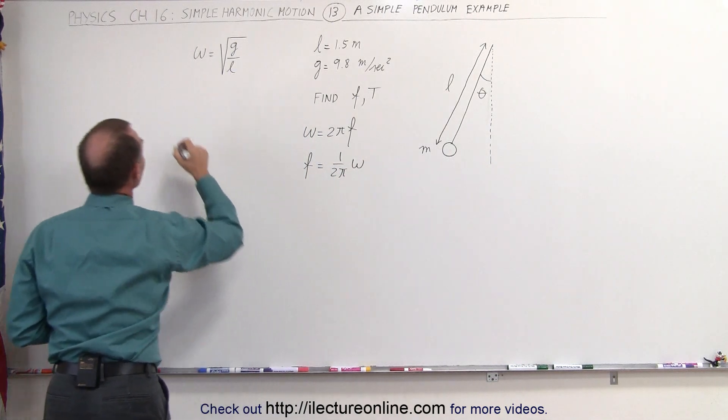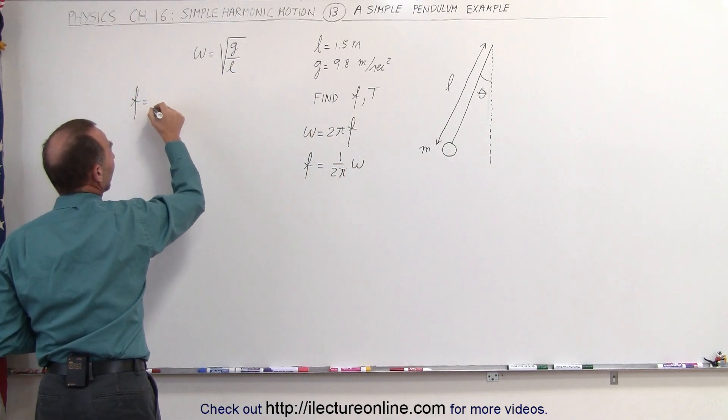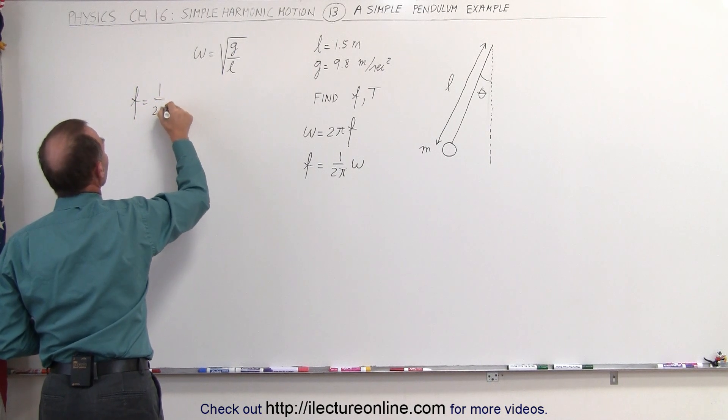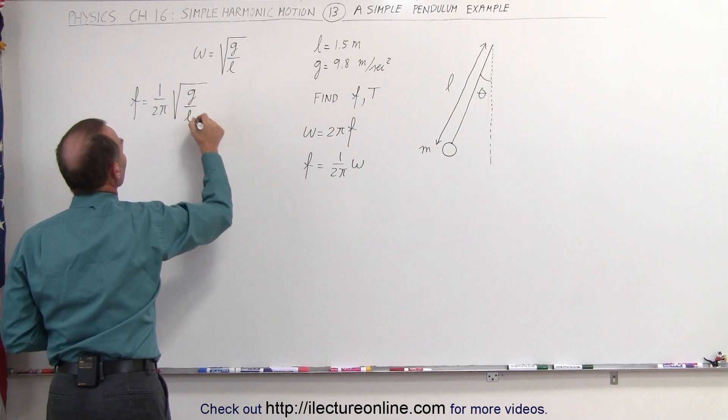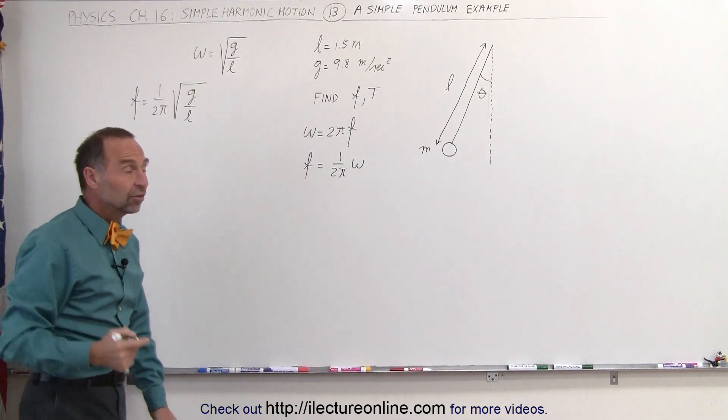Since omega is the square root of g over l, we can then say that the frequency can be found by taking 1 over 2 pi and multiplying that times the square root of g over l. Knowing that, let's plug in the numbers and see what we get.